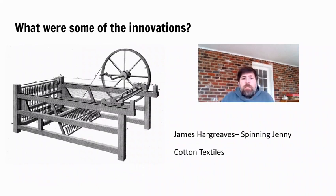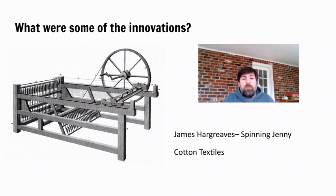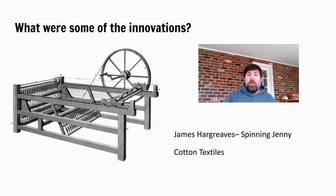Moving on to specific innovations: one of them is the Spinning Jenny, invented by James Hargreaves. It's a way to turn cotton into thread much faster, and it really sped up the production of cotton textiles. The Spinning Jenny essentially replaced the old spinning wheel.